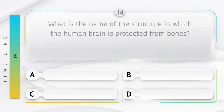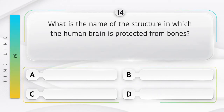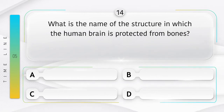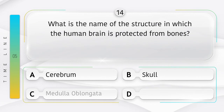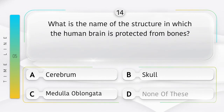What is the name of the structure in which the human brain is protected by bones? Option A: cerebrum, B: skull, C: medulla oblongata, D: none of these.